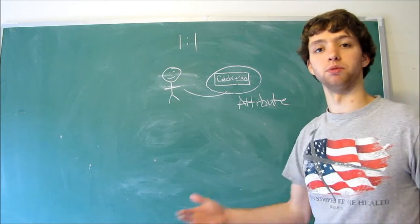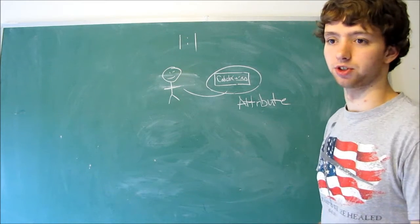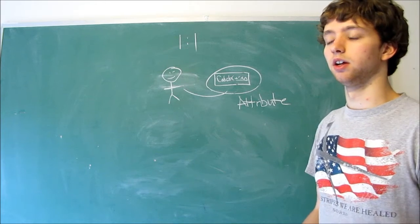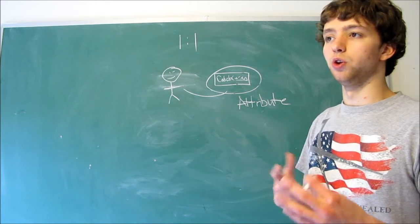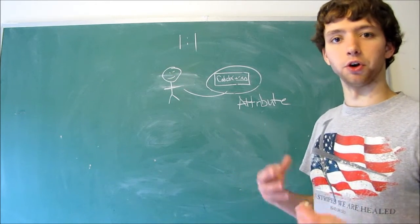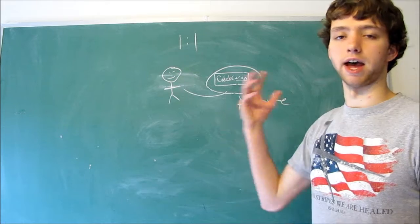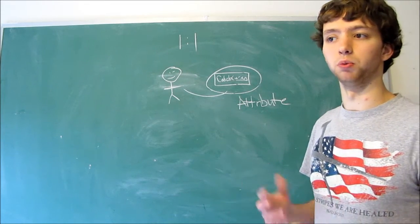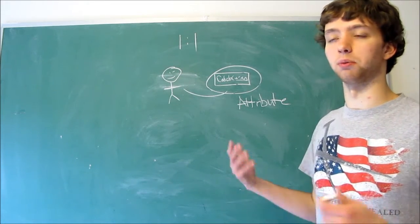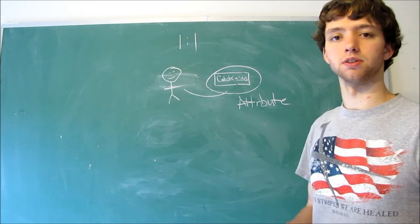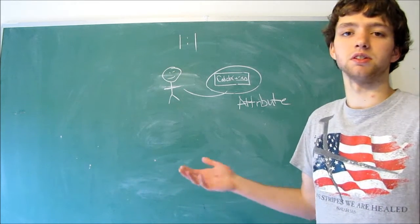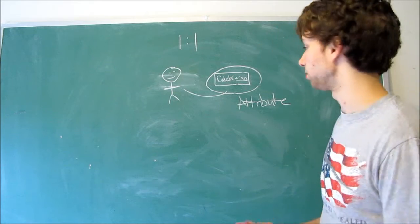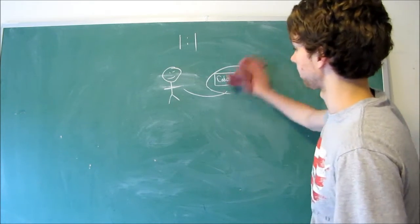When we're talking about one-to-many relationships or many-to-many, we think of something like a class. The students of the class are not exclusive to that class — they can take other classes. Therefore, it wouldn't really make sense to store them as attributes, because it just doesn't make much sense.